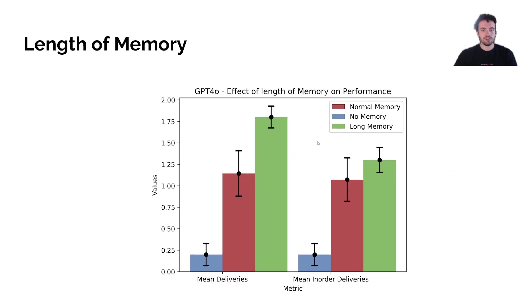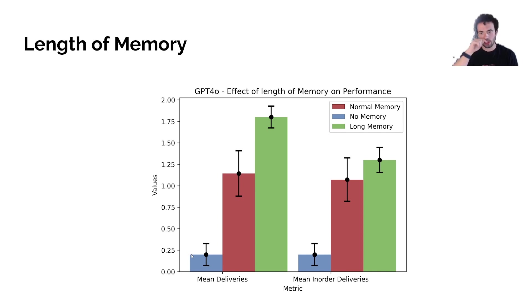Now for some experimental results. First, we varied the length of memory to figure out what would happen if the memory used was long or short. In the no-memory condition shown in blue, agents just know what they're doing right now with no knowledge of previous actions. We can see they deliver on average 0.25 plates — pretty bad performance.